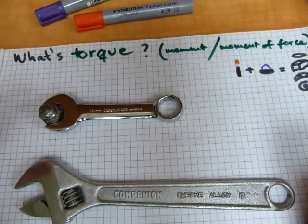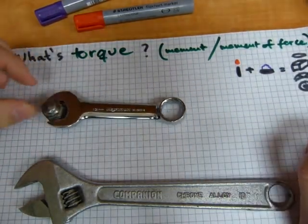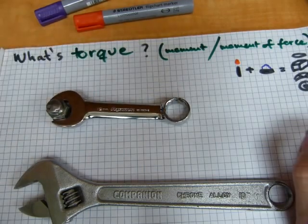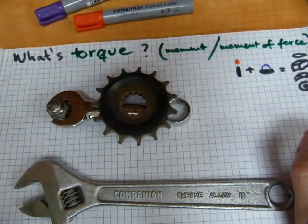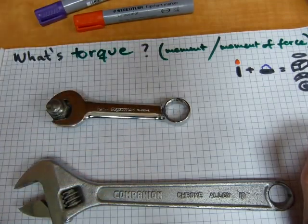So likewise, torque is not necessarily the final product. When it produces rotation, that rotation has an RPM. It's going to be spinning, so torque is not the end of everything.